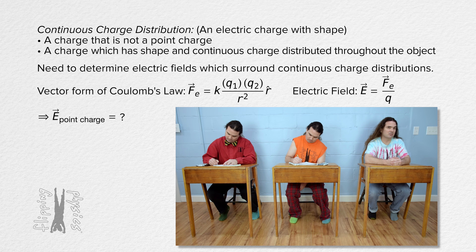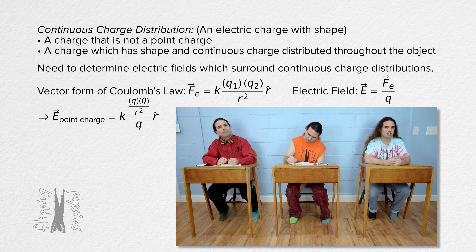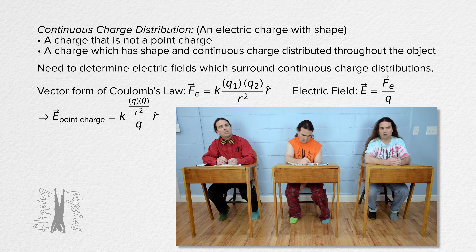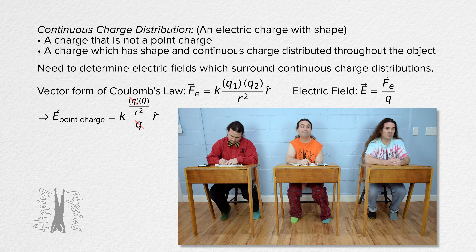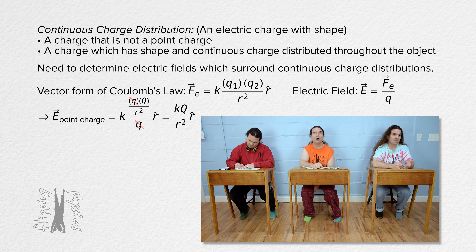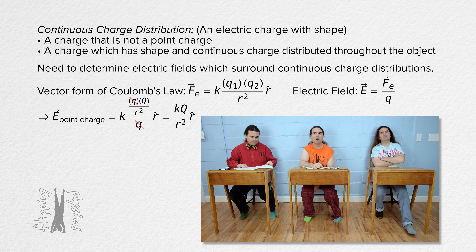That means the electric field caused by a point charge equals the Coulomb constant times the charge of the small positive test charge, little q, times the charge of the point charge, big Q, divided by r squared, all divided by little q, and then all times unit vector r. Little q, the charge on the small positive test charge, cancels out and we get that the equation for the electric field which surrounds and is caused by a point charge equals the Coulomb constant times the charge of the point charge divided by the square of r, the distance between the center of the point charge and the location where we are defining the electric field, all times unit vector r.